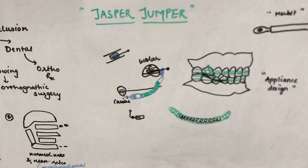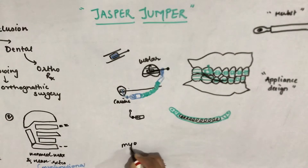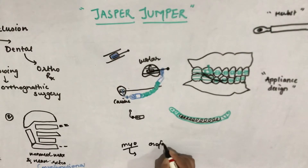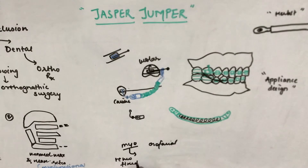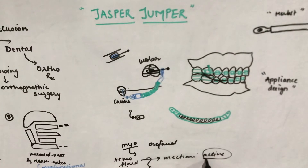The topic is the Jasper Jumper, which is a type of myofunctional appliance. Myofunctional appliances are a variety of intraoral appliances that depend upon the natural forces of the orofacial musculature for their action. 'Myo' refers to musculature. In orthodontics, we have removable, fixed, myofunctional, and orthopedic appliances as treatment modalities. Removable and fixed appliances are mechanical — they have active components that exert forces on the teeth, causing tooth movement.